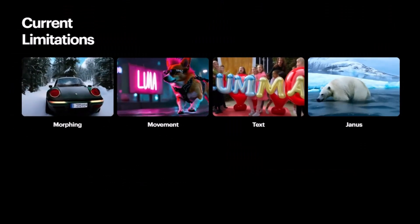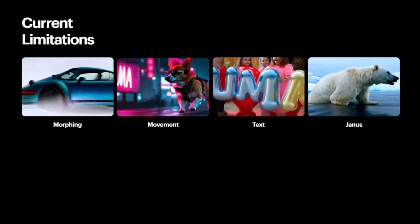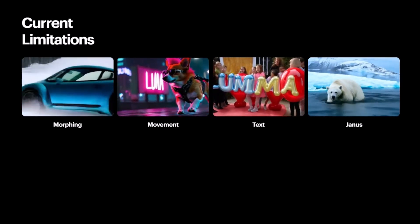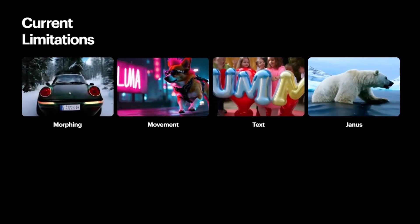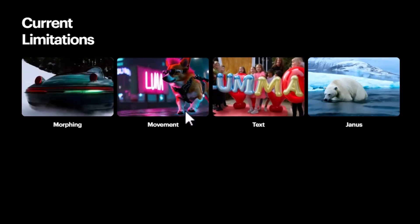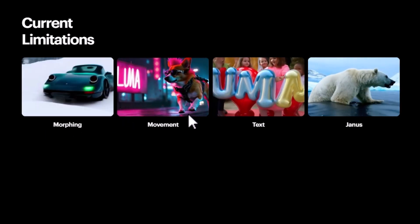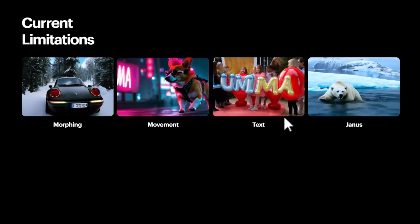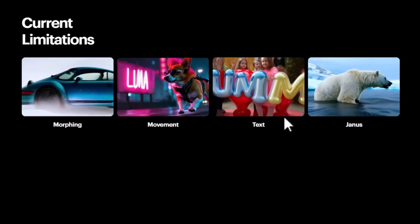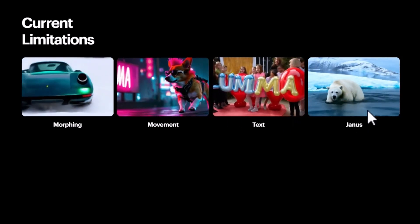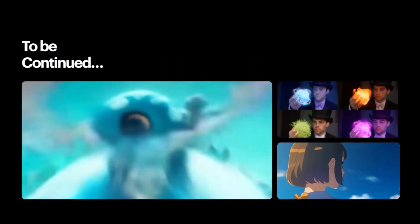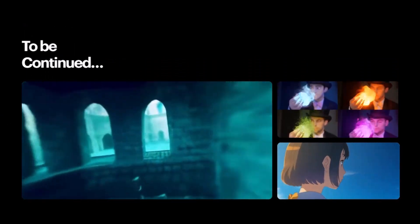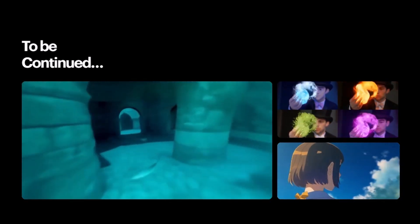There are still current limitations, as the tool is still being developed and improved. These include morphing artifacts — common in video generative AI right now — some movement issues, and difficulties with text generation, which is a challenge even for image AI tools. Overall though, even as it is right now, it's really amazing.